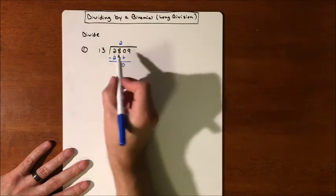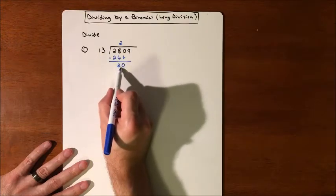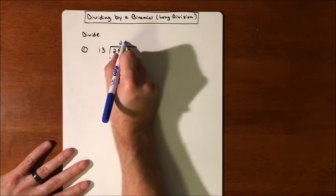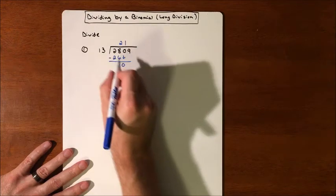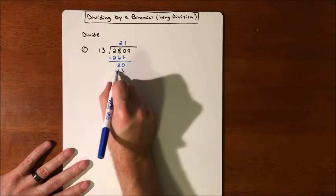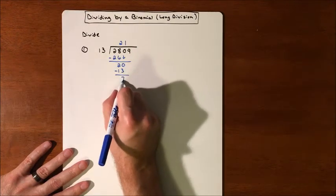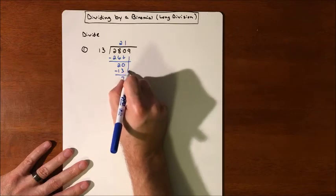We bring down the 0. Now we do the exact same thing. How many times does 13 go into 20? It goes into it 1 time. So we multiply, we subtract. That gets us a 7.